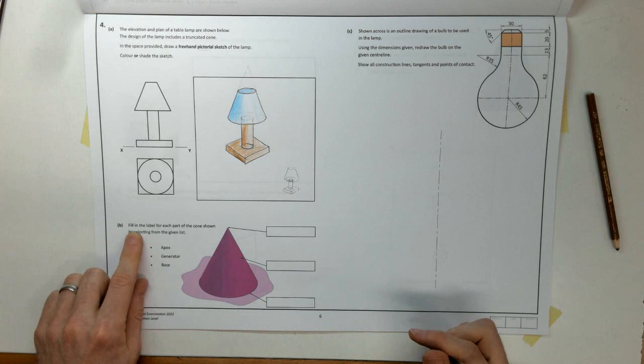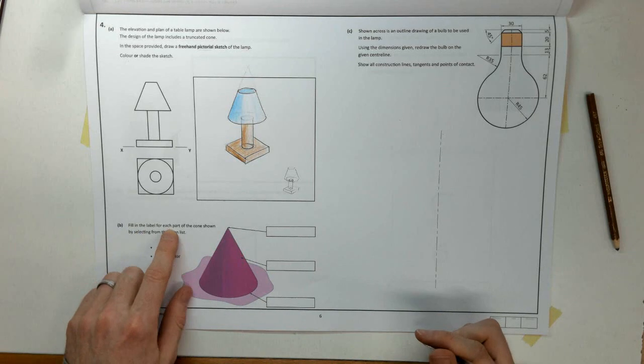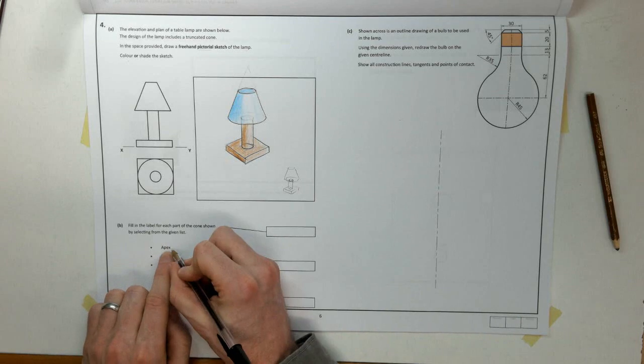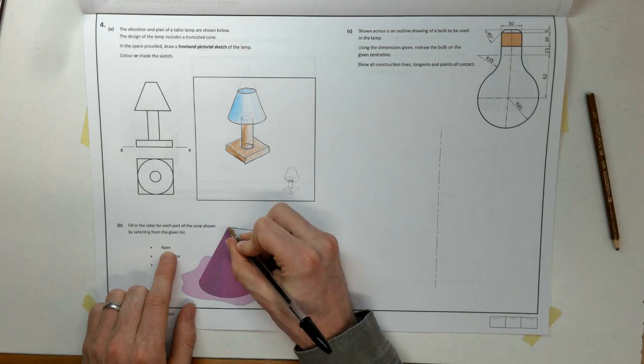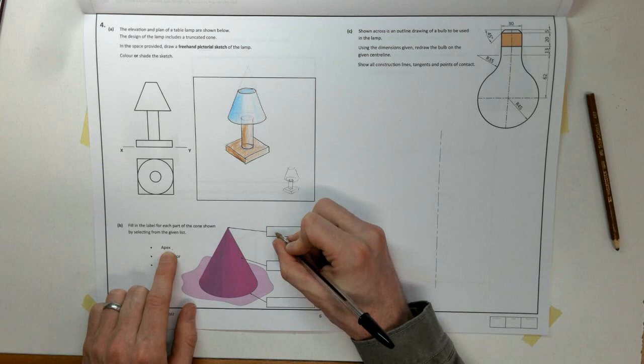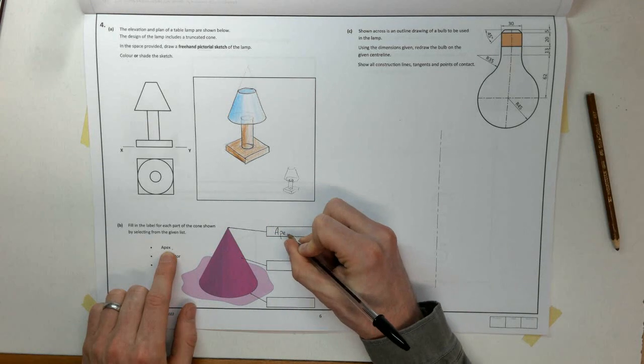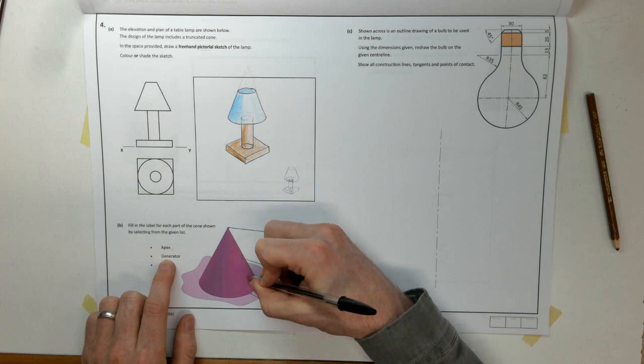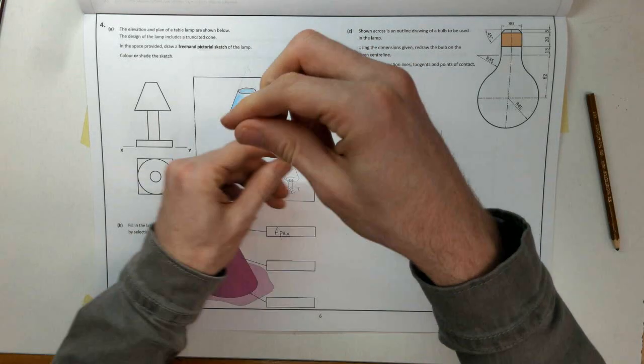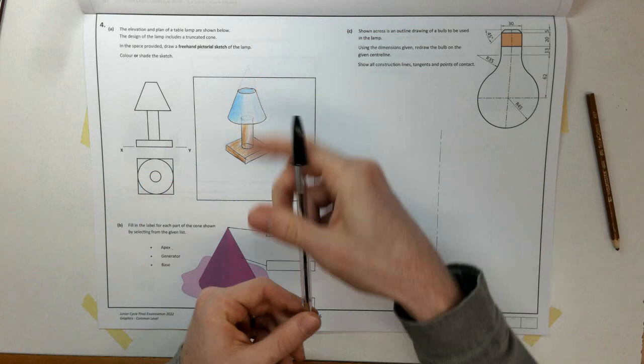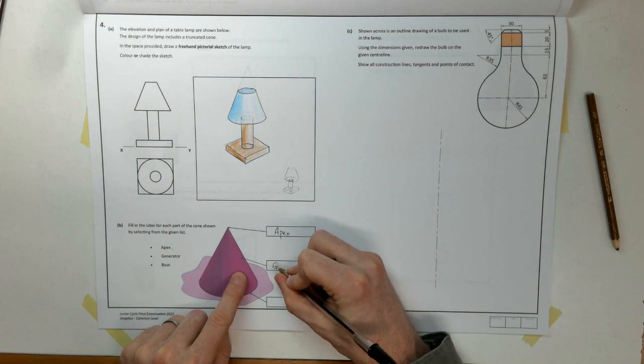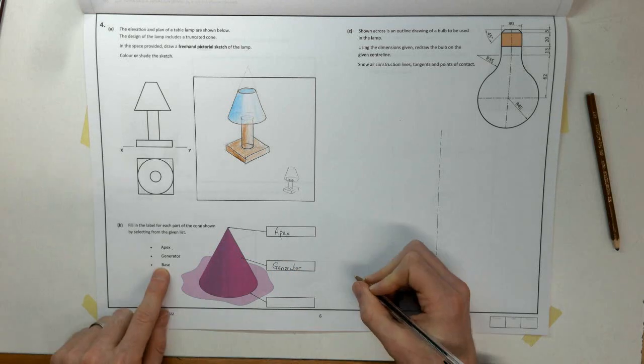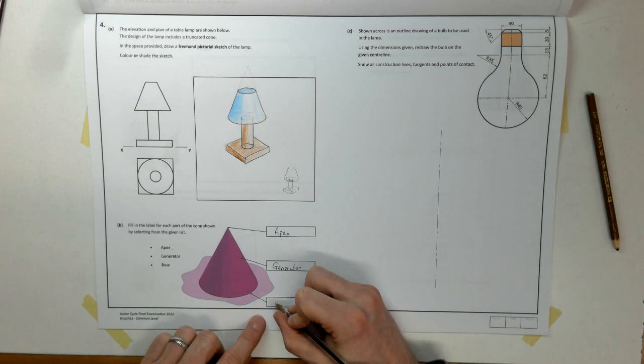So part B, fill in the label for each part of the cone shown by selecting from the given list. Start at the top, apex. So our apex is our very top of our cone. That's our apex. Our generator is a line on the surface of the cone. Imagine it rotates around to generate our cone shape. So that's our generator. And then we have the base. So our base circle, that's our base.